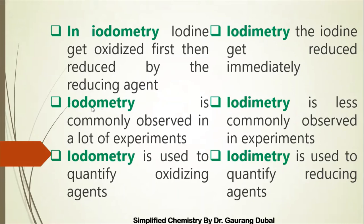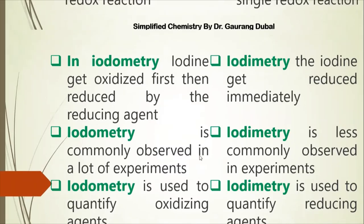Iodometry is commonly observed in many experiments while iodimetry is less commonly observed. Iodometry is used most of the time while iodimetry is used very less. Also, iodometry is used to quantify oxidizing agents — always keep that in mind — while iodimetry is used to quantify reducing agents.